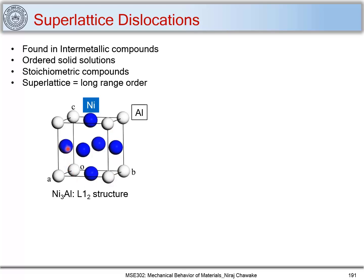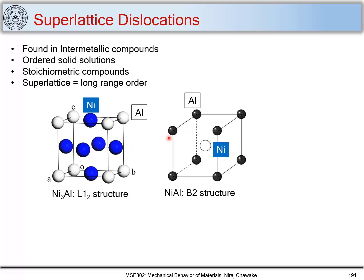Let us look at another intermetallic compound NiAl, where aluminum occupies the corners and nickel occupies the body center. Here nickel is 50 atomic percent and aluminum is 50 atomic percent. This structure is called the B2 structure. Both nickel and aluminum are FCC but the structure formed looks like a BCC structure — however, it is not BCC, it is B2. These designations are called Strukturbericht designations, and you can look up the meaning of B, 2, L, 1, and the subscript 2 in crystallography textbooks.